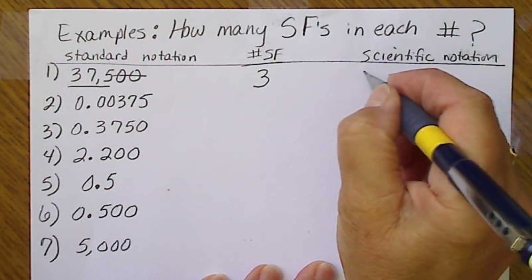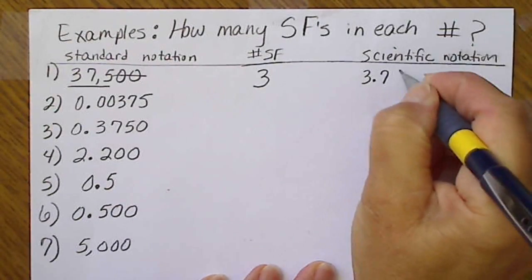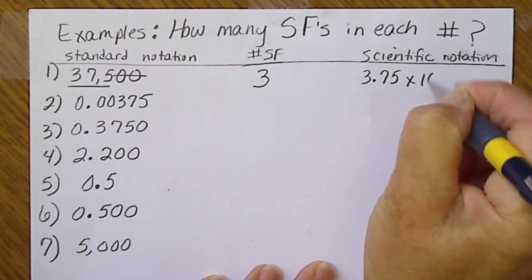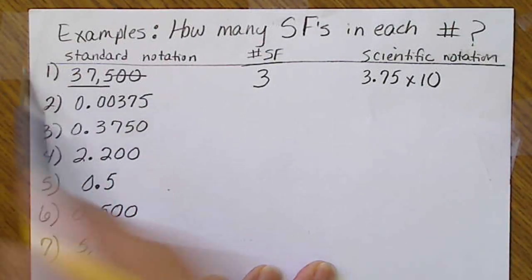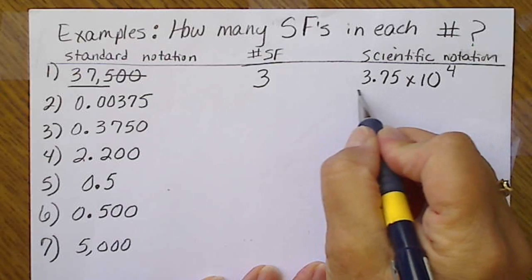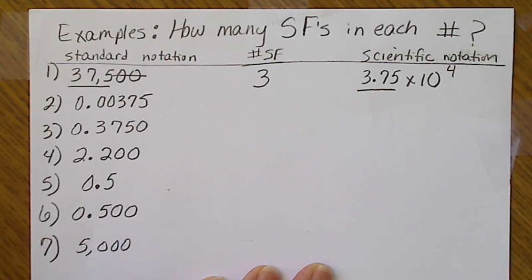The way we put this in scientific notation, 3.75 times 10 to a positive power, 1, 2, 3, 4. And again, the three significant figures do show up when we put the number in scientific notation.